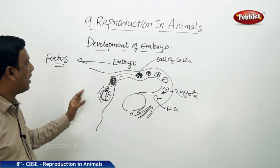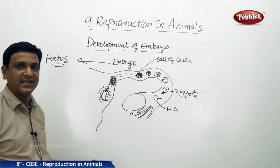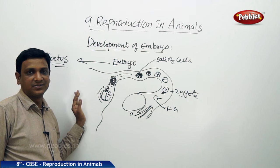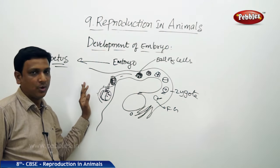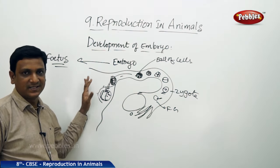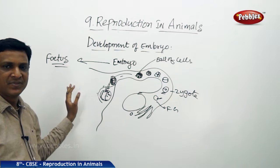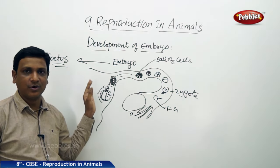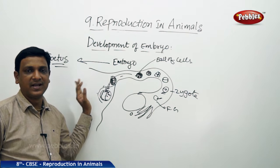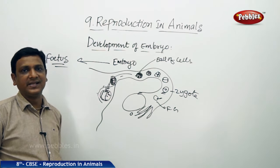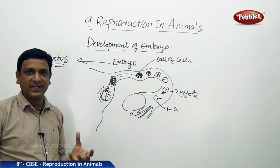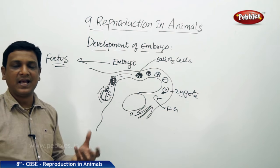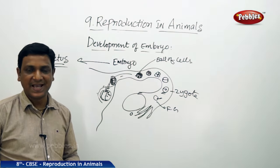This is how the development of embryo takes place in higher animals with internal fertilization — this is the example of humans. The same process happens with other mammals like cows, dogs, and cats. Now let us see how the development of embryo takes place in animals like birds. The hen lays an egg — hens do not develop the baby inside their body; development takes place outside.